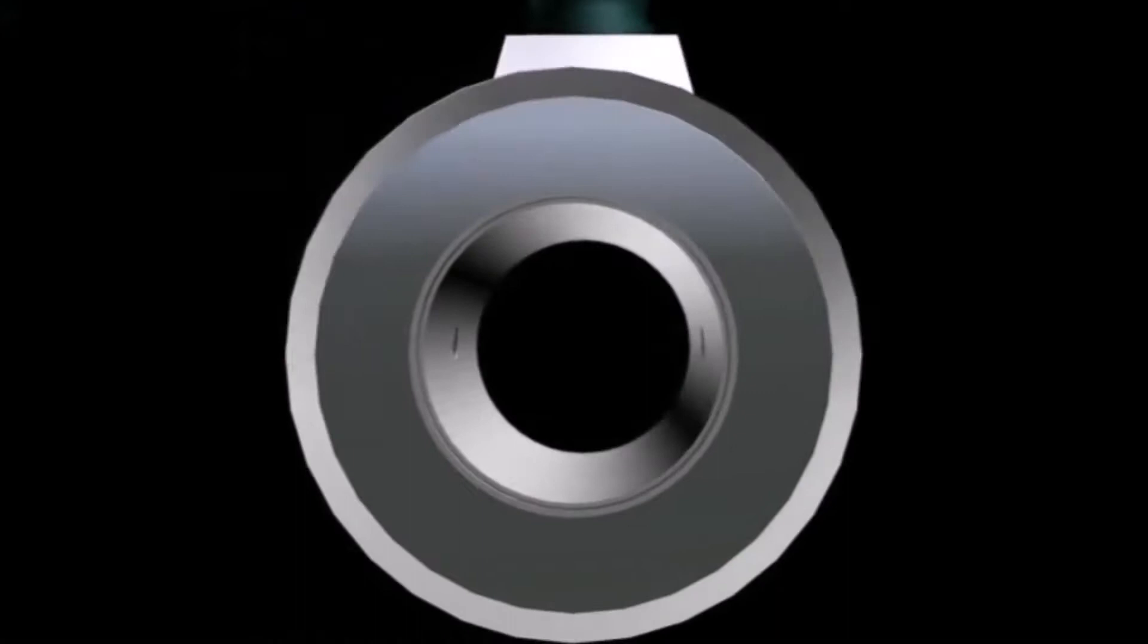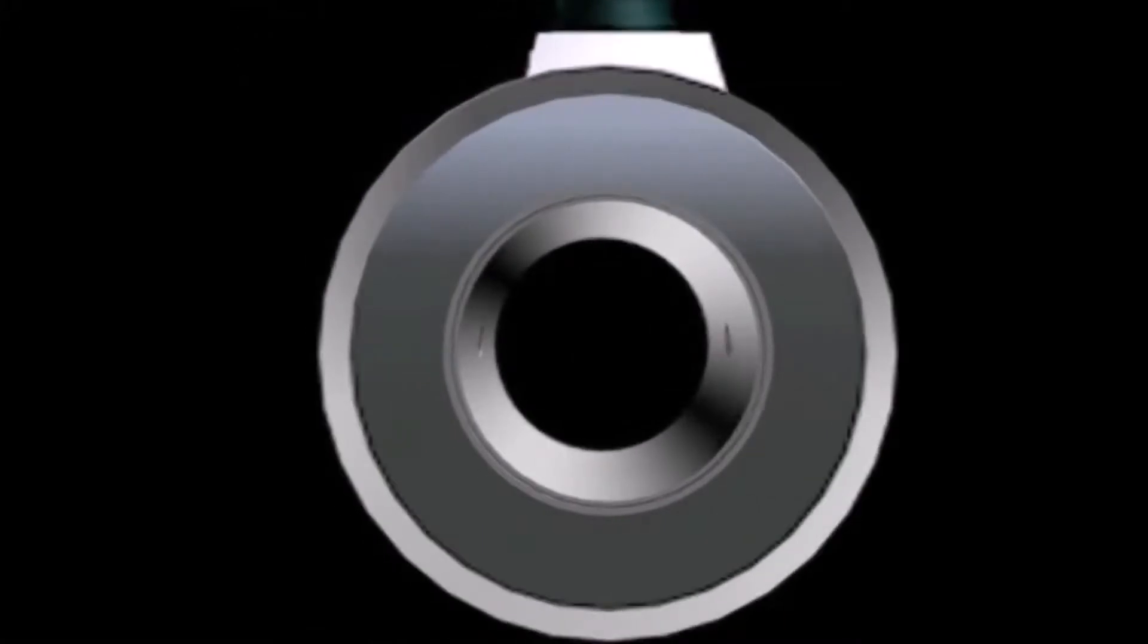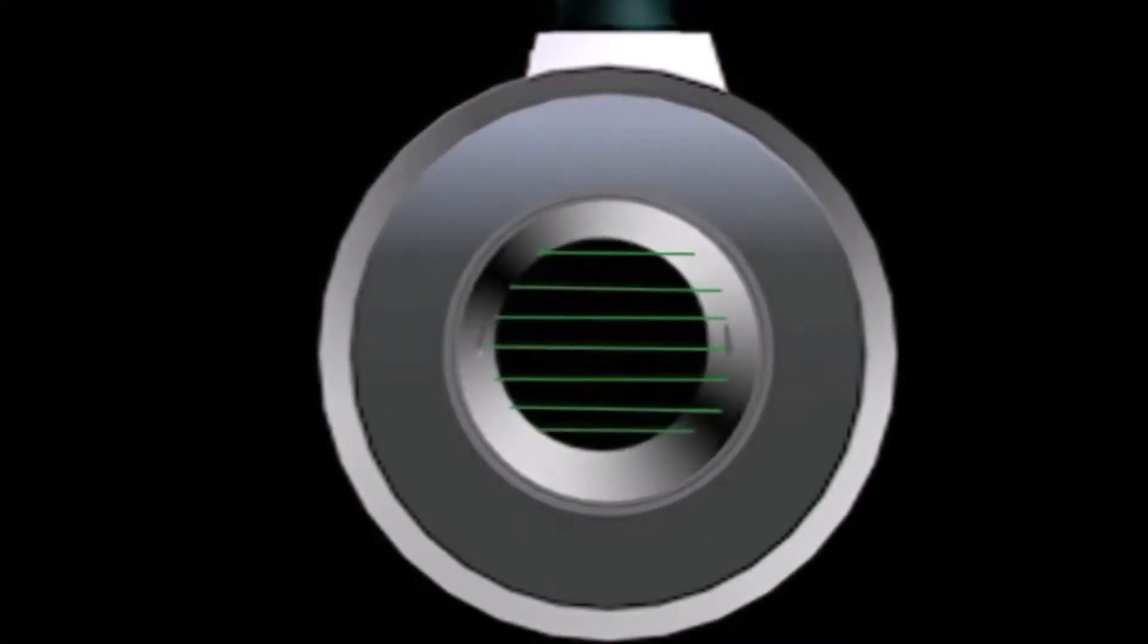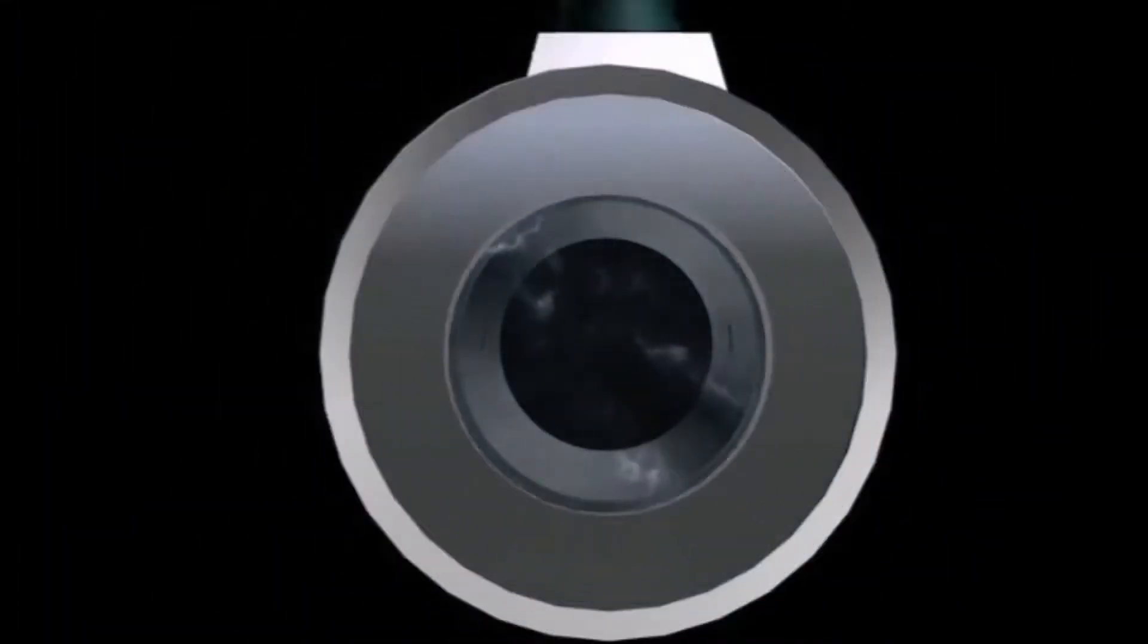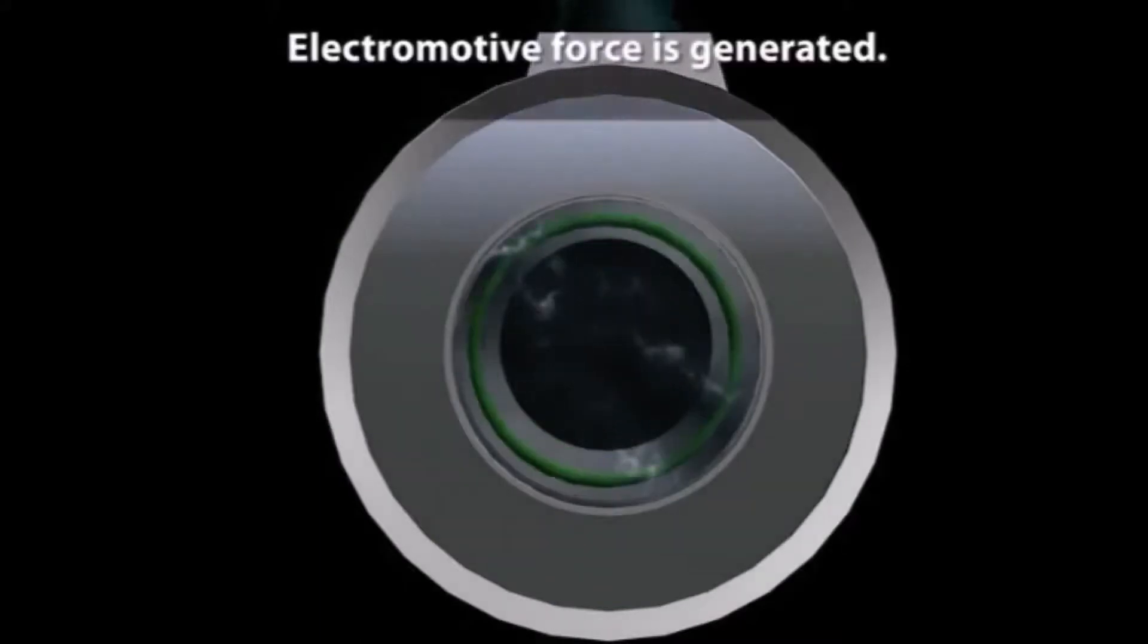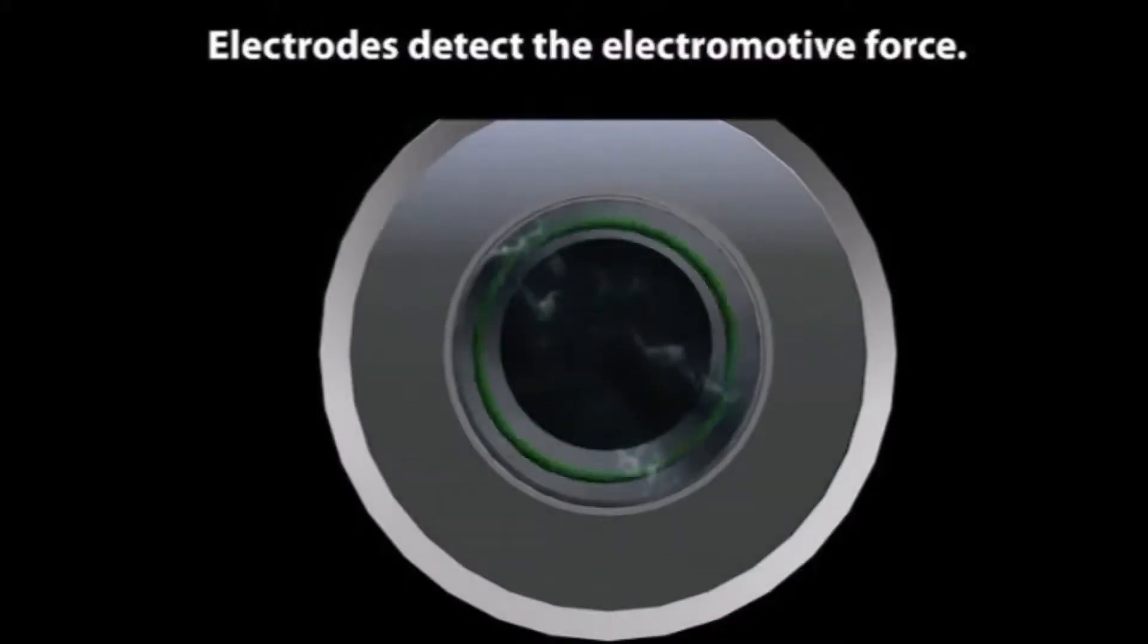Magnetic flow meters are built so the direction of the magnetic field is perpendicular to the flow, and the line between the electrodes is also perpendicular to the flow. As a conductive liquid flows through the flow tube, an electromotive force is generated. The electrodes detect the electromotive force.